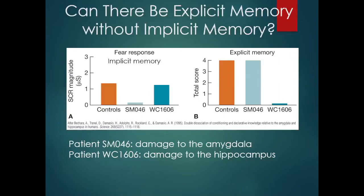What we have is control group college students, then we have patient SM046 who had damage to the amygdala, and then patient WC1606 who had damage to the hippocampus, which I think we've established that the hippocampus clearly has something to do with long-term effortful memory and the amygdala is the part that adds in emotion.